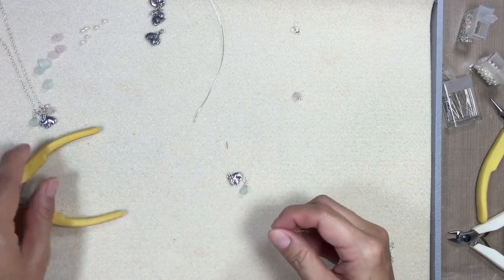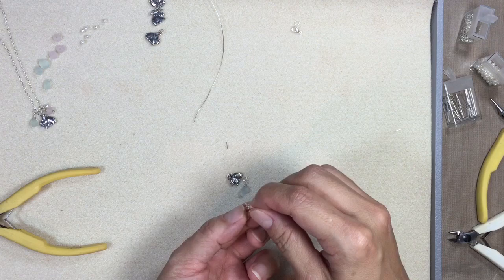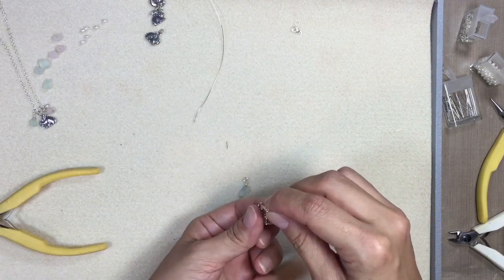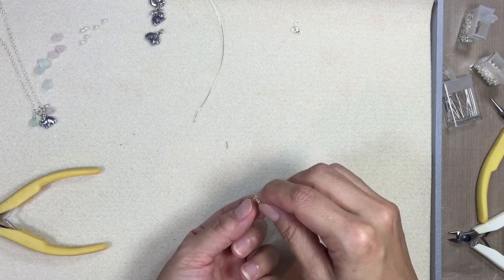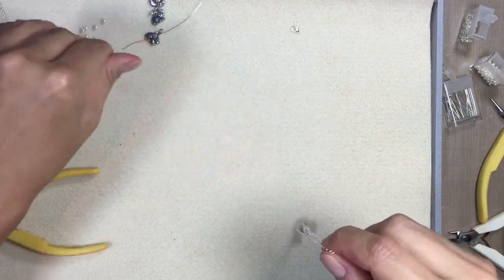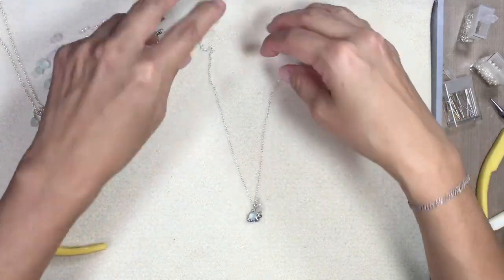So I'm going to string on a pearl, string on my rose quartz, string on the bunny, and finally this cute little pre-knight. Oh my cute little fluorite and my bunny necklace is done.